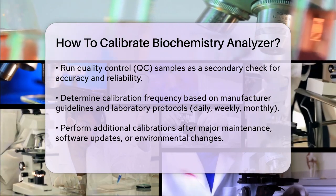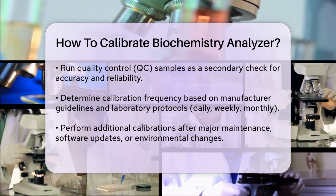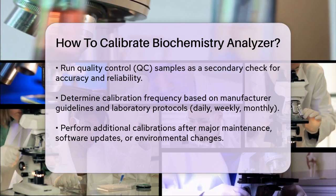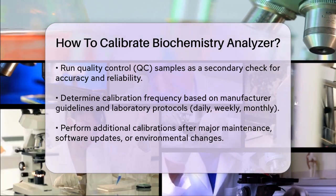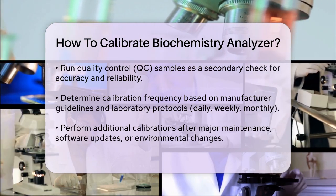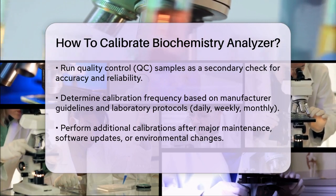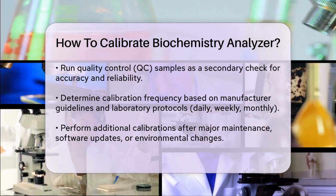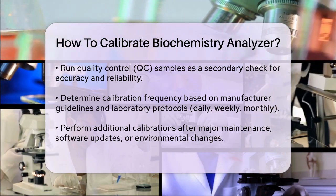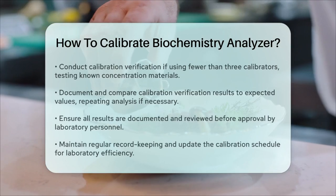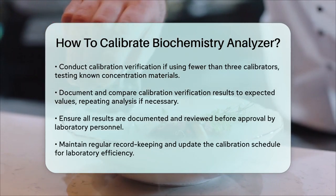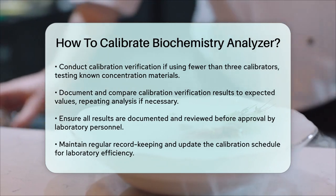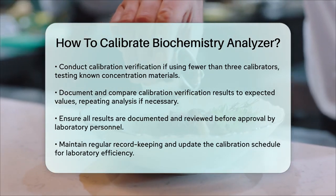Calibration verification is another important aspect, especially if you're using fewer than three calibrators for routine calibration. This process involves testing materials of known concentration in the same manner as patient specimens to ensure the test system accurately measures samples throughout the reportable range. This verification is usually required every six months, or more frequently if indicated by the manufacturer or the laboratory. When performing calibration verification, use materials such as calibrators from a different lot, commercially available materials, or primary or secondary standards with known concentrations. Compare the results to expected values and document them. If the results show non-linear calibration, you may need to repeat the analysis according to your laboratory's established criteria.